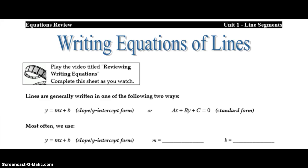So lines are generally written in one of two ways. y equals mx plus b is known as slope y-intercept form. Or ax plus by plus c equals 0, which is standard form.